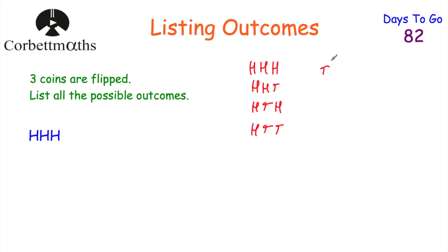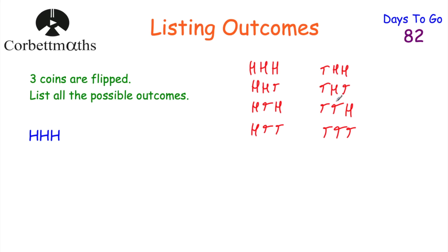Now let's say the first coin is a tail. We could have tail, head, head; tail, head, tail; tail, tail, head; and tail, tail, tail. So there are eight possible outcomes in total. Rather than jumping around randomly, I started by letting the first coin be heads and listed all those outcomes, then let the first coin be tails and listed all those outcomes.